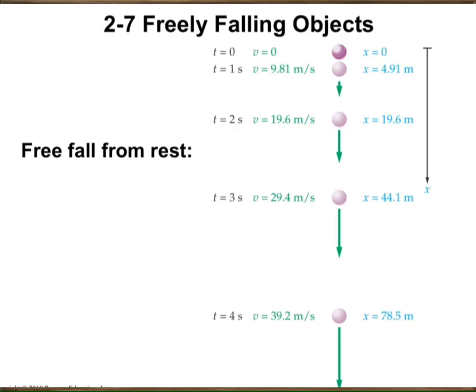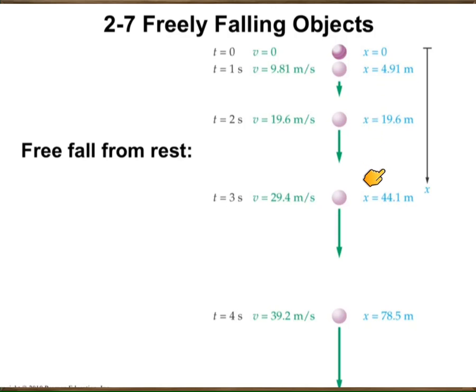When you look at the distance or position of the object as it falls — at one, two, and three seconds — you will notice that at t = 1 s the object falls 4.91 meters. At t = 2 s it is not double that value, and at t = 3 s it is not triple 4.91. This is because position x runs as a quadratic — as t² — not linearly like velocity. In constant accelerated motion, x is a function of t², not t.